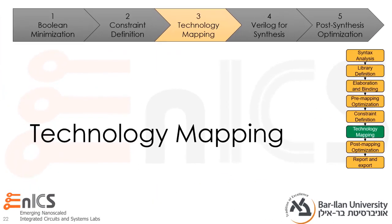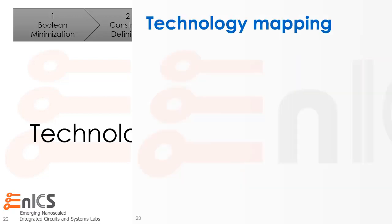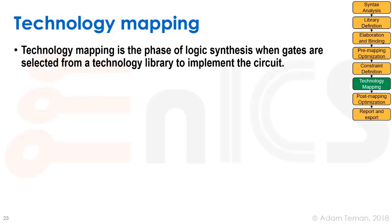The next stage of synthesis is technology mapping — the phase of logic synthesis when gates are selected from a technology library to implement the circuit. Up till now, all we had was a generic representation, whether a BDD or generic AND/OR gates inside the synthesis tool. These generic gates don't have drive strength, size, or other physical properties — they're just representative gates that allow us to do multi-level logic optimization.